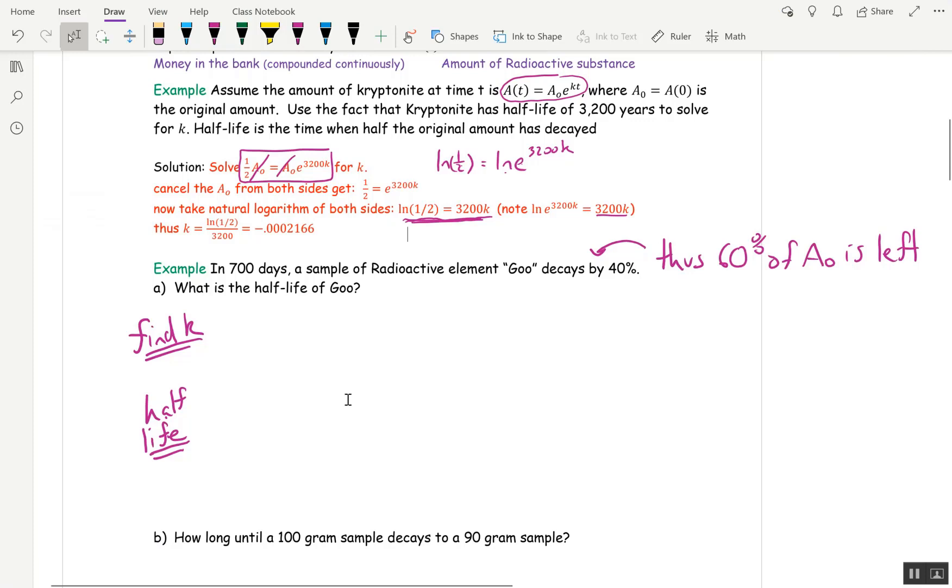In 700 days, a sample of radioactive element goo decays by 40%. What's the half-life? So many of these problems are multi-part, and this is one of them. We cannot find the half-life right away. First, we need k. And we're given that 40% decayed in 700 days. That means 60% is left.